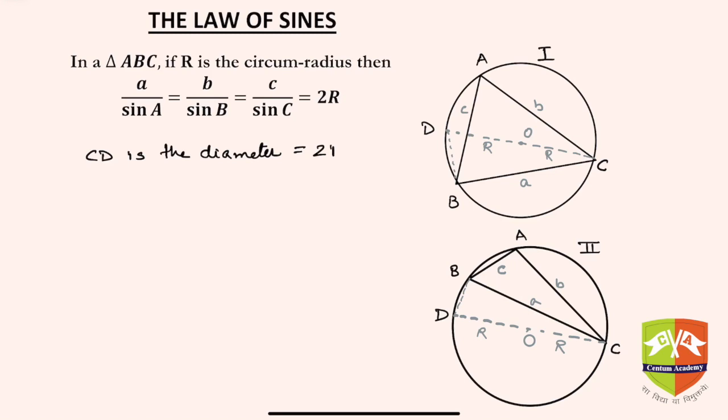Now clearly, angle CBD in both cases is equal to 90 degrees. Why? Because the angle subtended by a diameter on any part of the circumference is 90 degrees. So CBD in both cases is 90 degrees.